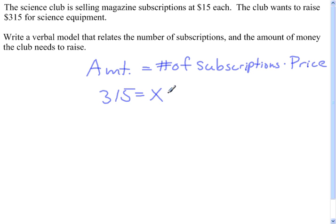times the price for each subscription, which would be $15. Another way to write this would be $315 is equal to $15X. Both of these answers are correct, however.